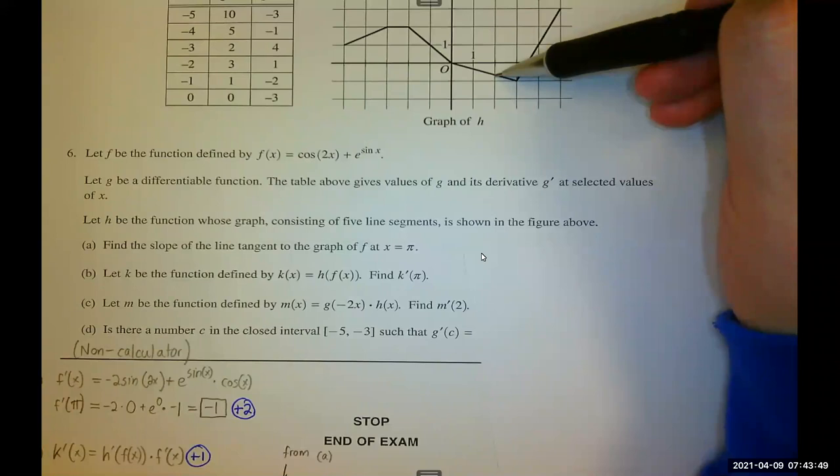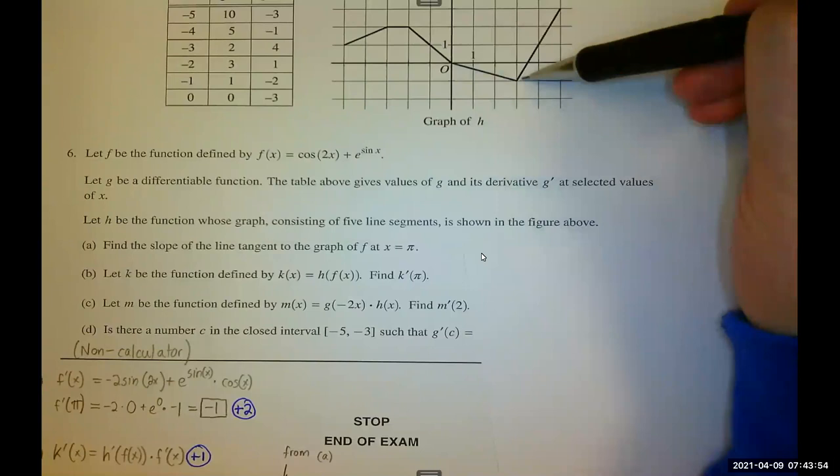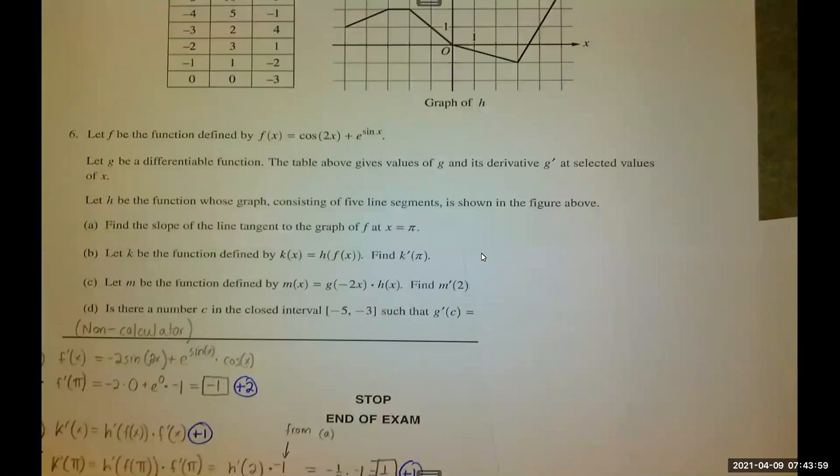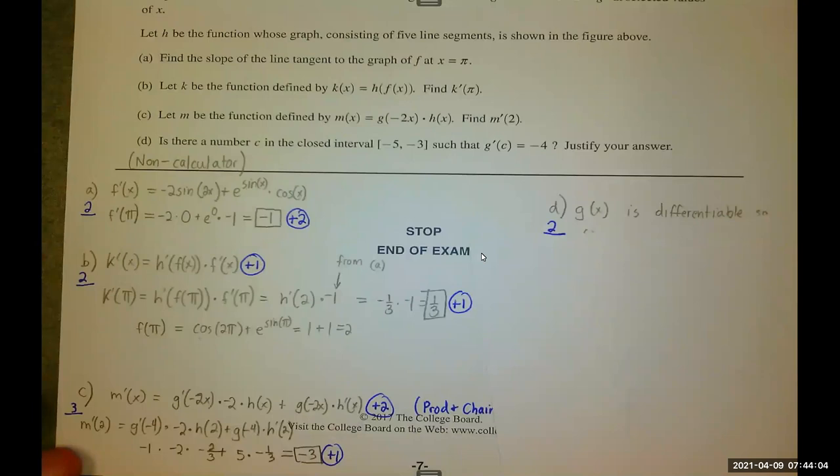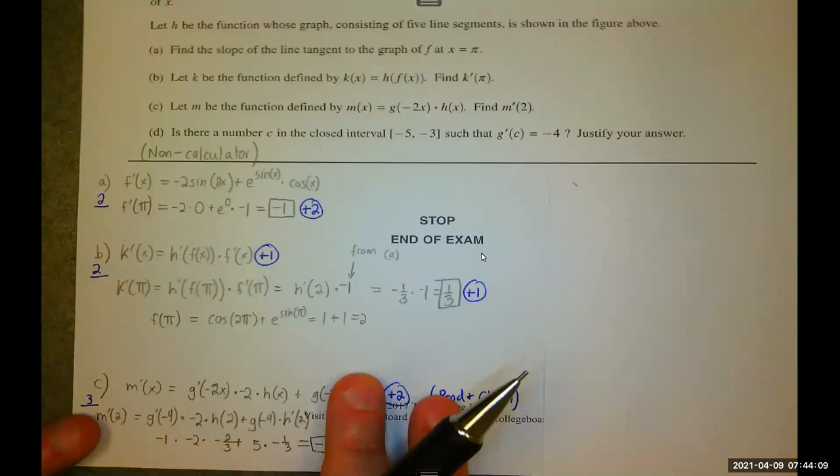So 2 is right here. I need H prime. The concept of the derivative we're using here is the slope. So it's a line. It goes from this point to this point, which is down 1, right 3. That's a slope of negative 1 third. That's how I knew negative 1 third for H prime of 2. You don't have to organize it perfectly like I did, but you do need to have correct notation throughout.